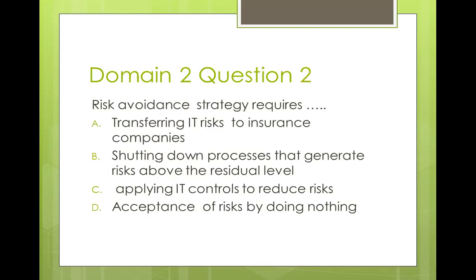The second question: a risk avoidance strategy requires A) transferring IT risk to insurance companies, B) shutting down processes that generate risk above the residual level, C) applying IT controls to reduce residual risk, D) acceptance of risk by doing nothing. A is risk transfer, C is risk mitigation, D is risk acceptance — so B is risk avoidance. You shut down the process or avoid implementing processes that will create risk, but that also means you lose out on the benefits. So choose risk avoidance very carefully. B is the answer.